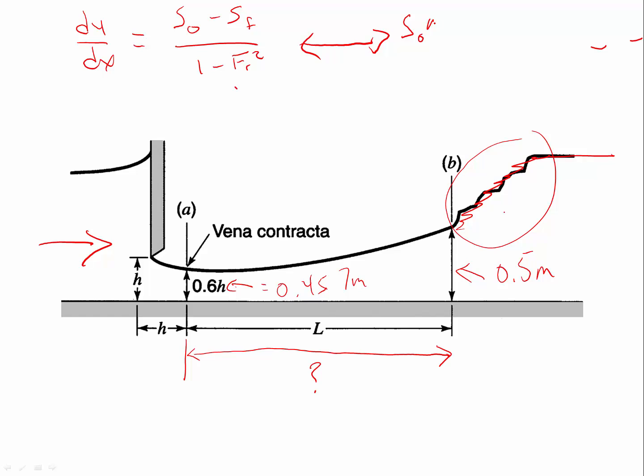We're going to use the form of the equation: S sub o times delta x plus v1 squared over 2g equals delta y plus v2 squared over 2g, and then I'm going to carry this on down to right here, and then it's going to be plus s sub f times delta x.